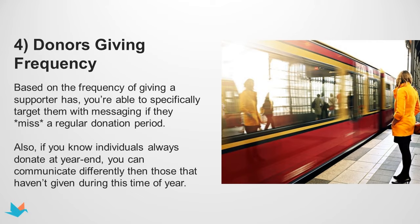The fourth segmentation type is giving frequency. This is important because you can see when donors give to you regularly and reach out proactively when they miss their regular donation period, or provide impact reports prior to their next giving cycle to hopefully upgrade their giving. Monitoring how frequently someone gives also shows they have higher affinity to support your organization. Segmentation takes work, but it's a great way for smaller nonprofits to raise more money from fewer donors by cultivating those relationships more effectively.